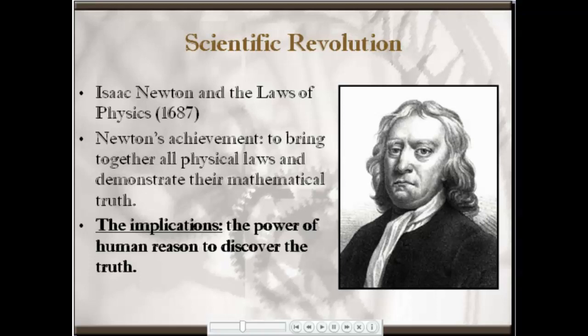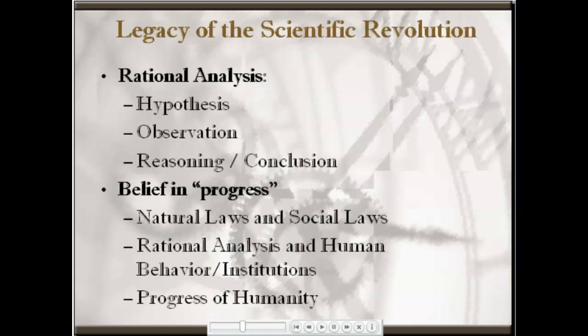The great discoveries of the scientific revolution had been based on the use of rational analysis. To this day, scientists use the scientific method — the establishment of a hypothesis, the checking of that hypothesis through observation, and the reaching of a conclusion that will establish a scientific theory — that Newton, Copernicus, and Galileo had first established over 400 years ago. The realization that humans, through observation, could determine the laws of nature led to a new belief in progress: the belief that if natural laws could be discovered, so could social laws. Rational analysis could be used to better understand human behavior and the social and governmental institutions that humans had created, thereby leading to the improvement of humanity in the future.